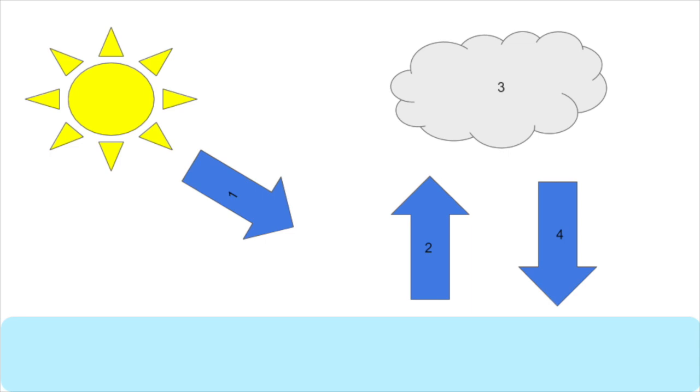When the cloud no longer can bear the weight of the water, it precipitates, which is represented by arrow 4. So this is the process of the water cycle.